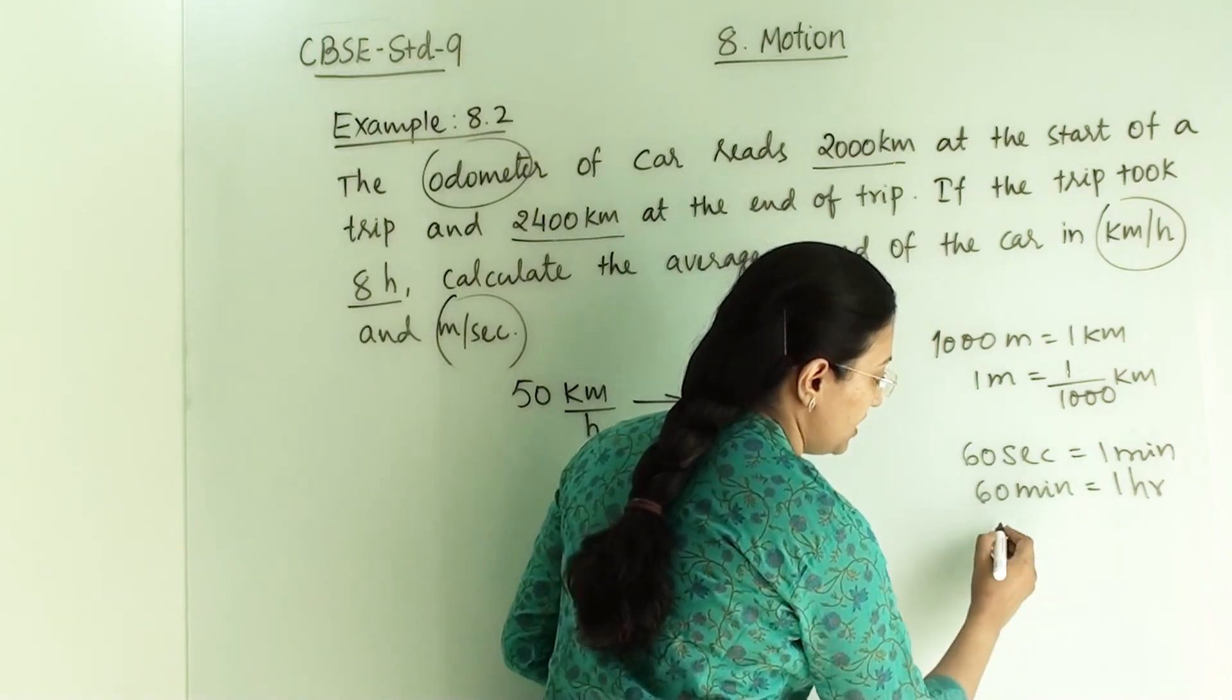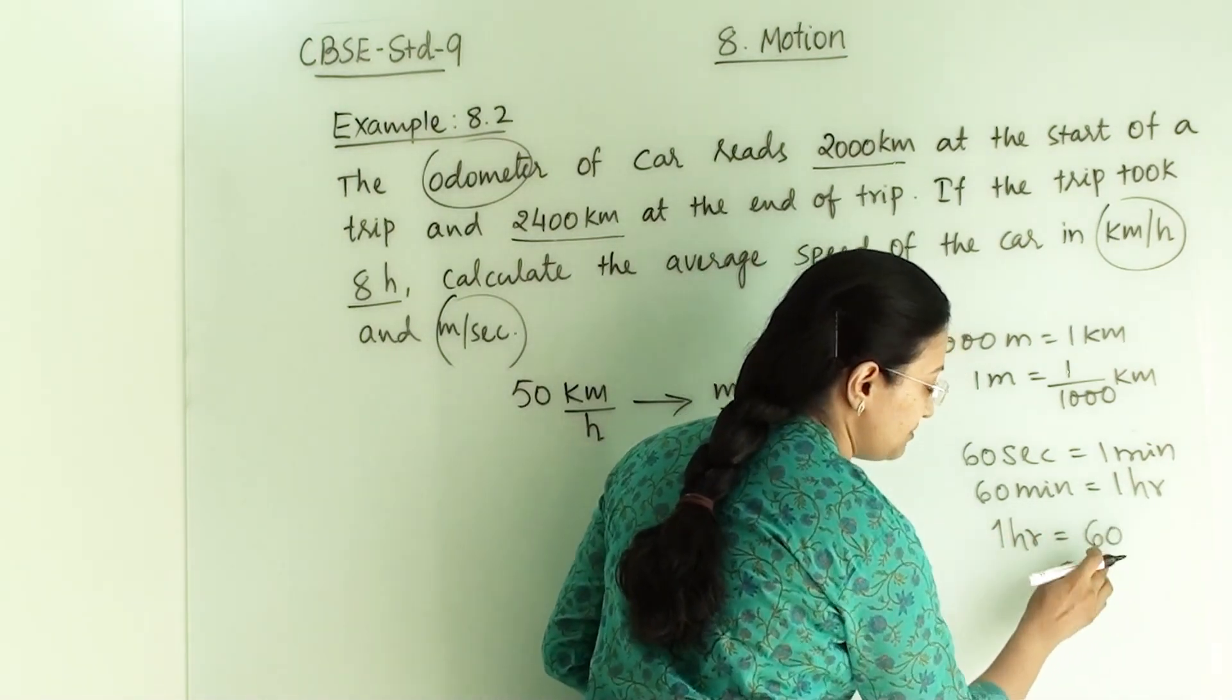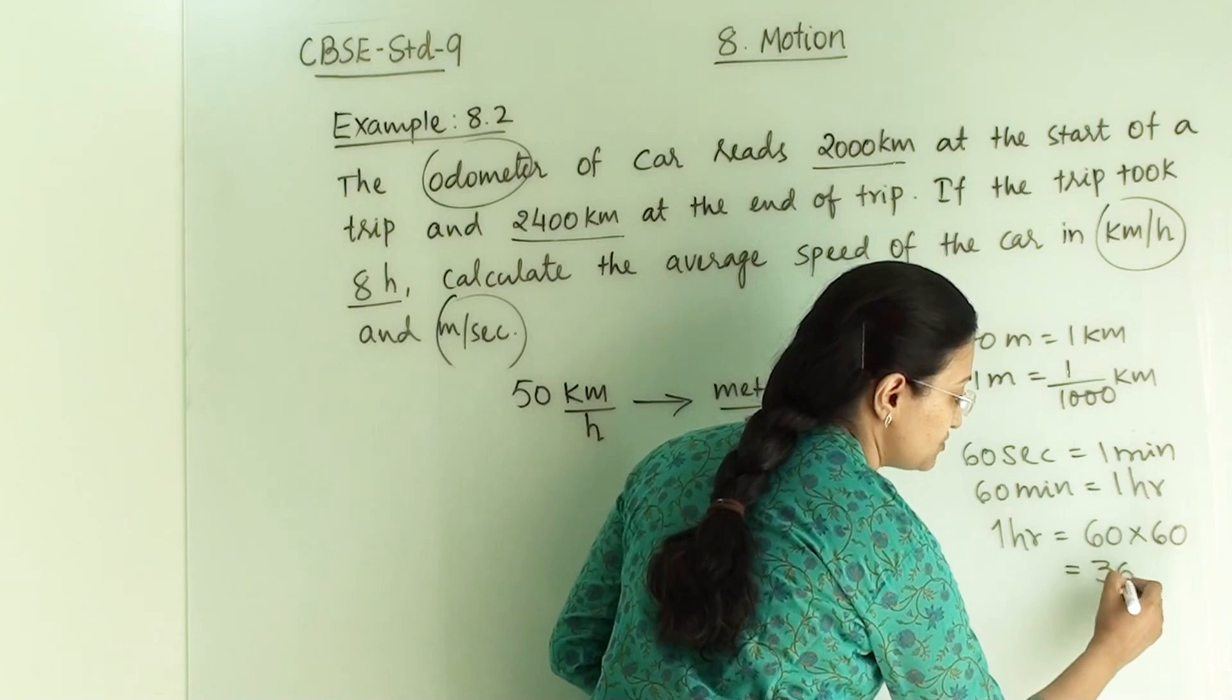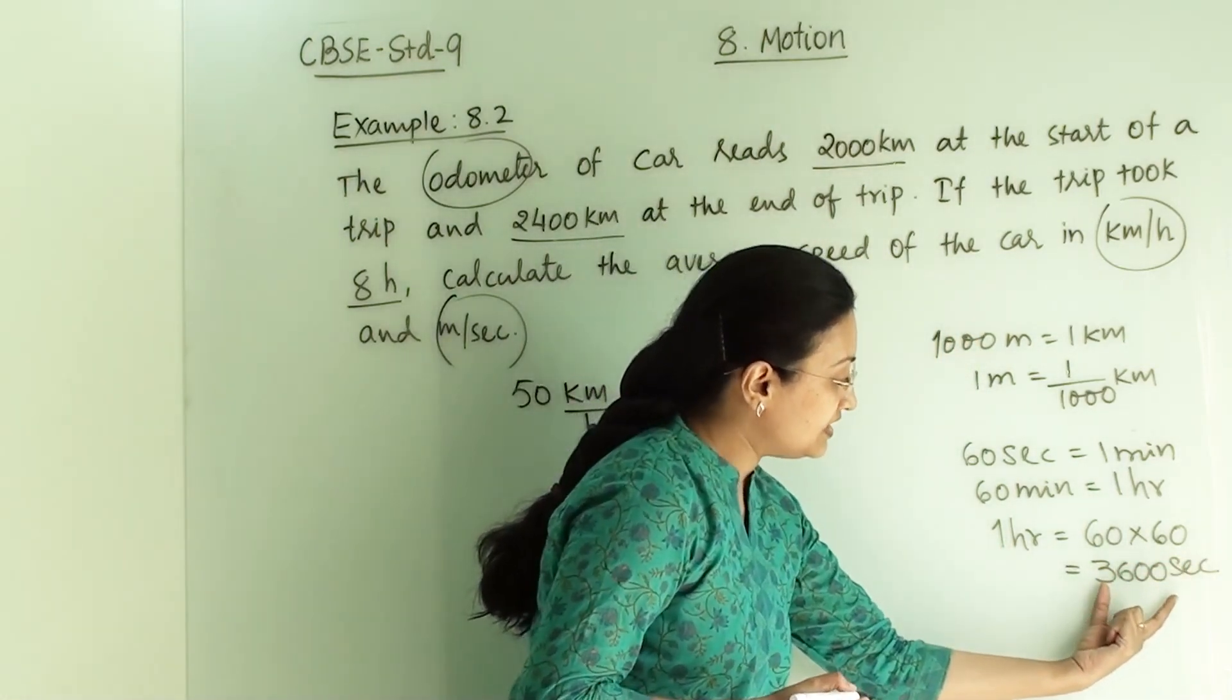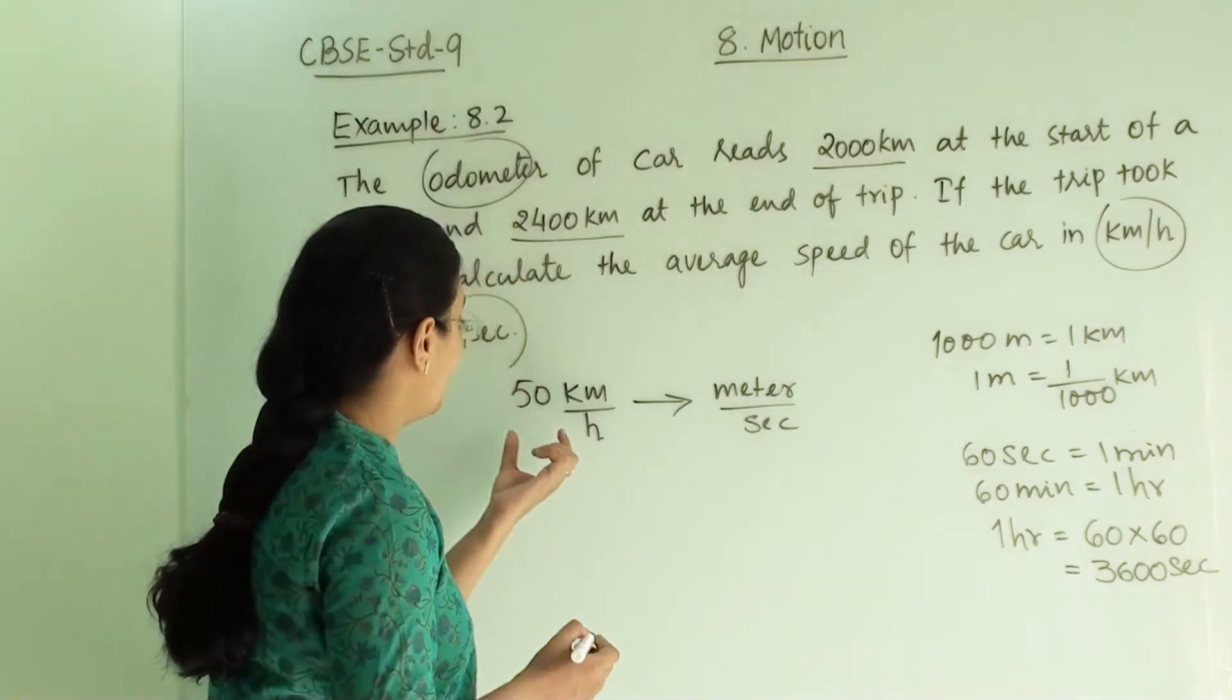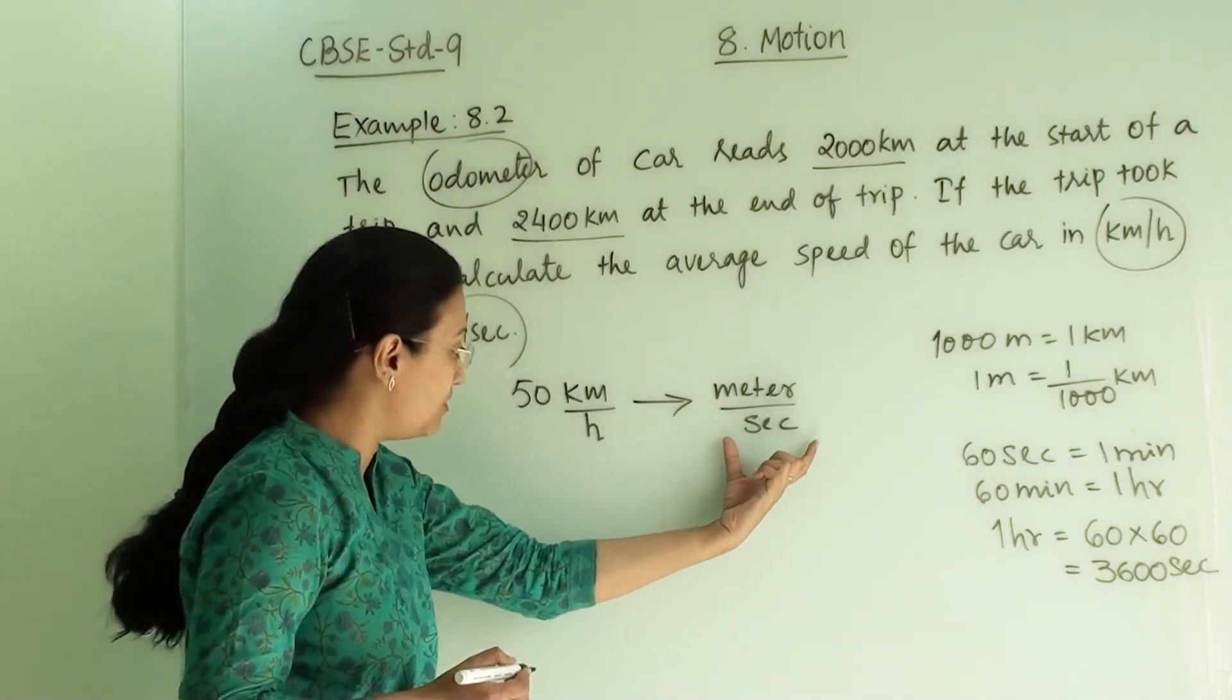So 1 hour equals to 60 minute into 60 second, which gives us 3600 seconds in total. So 1 hour equals 3600 seconds in total. These are the conversion factors which we have to remember.